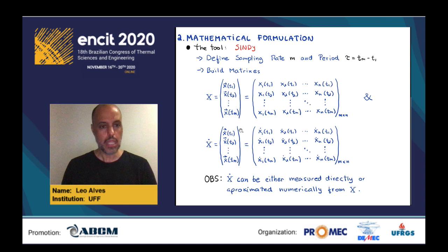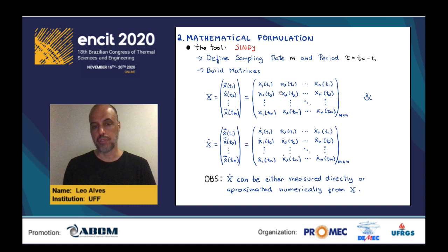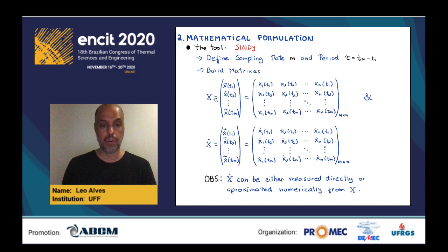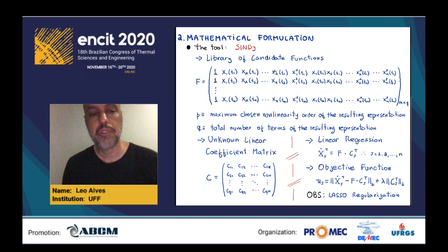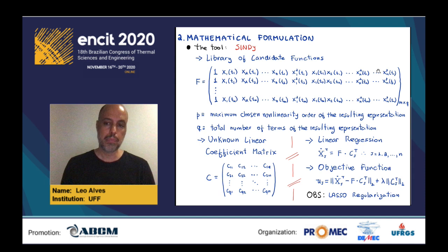In CINDY, the first thing you do is define a sampling rate M and a sampling period tau, depending on the initial and final times used to extract your data. Then you build your matrices, evaluating the state vector at different times. You also need the time derivative of that data, which you can either measure directly or approximate numerically. Then you build your library of candidate functions — typically a polynomial representation using a monomial basis, which is a power series: 1, X, X squared, and all combinations up to the highest order P, giving Q possible terms.